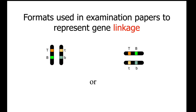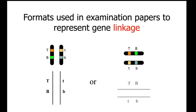In the IB, they represent linkage in the following way — using a line with uppercase and lowercase letters to illustrate the alleles for each gene. The illustrations on the left and right are the notation that the IB uses in examination papers. Check out the screen now.